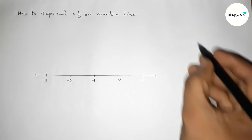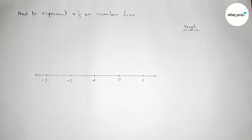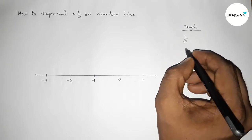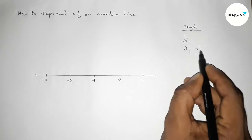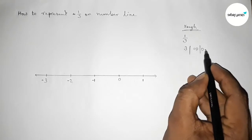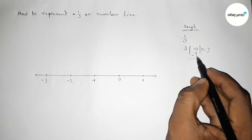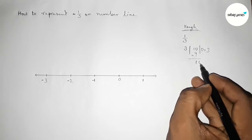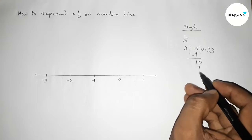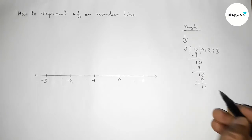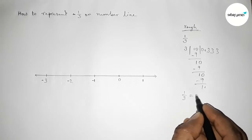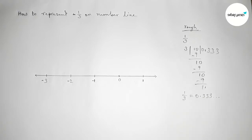Now let's do a rough calculation. We cannot divide one by three exactly, but we can divide it approximately. Performing long division: one by three gives zero point three three three and continuing. So the value of minus one by three will be minus zero point three three three and continuing. Therefore minus one by three lies between zero and minus one.